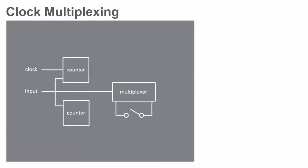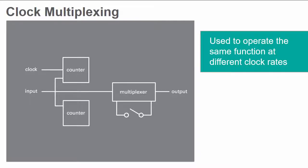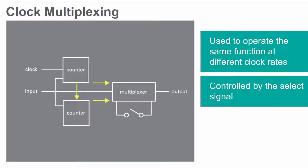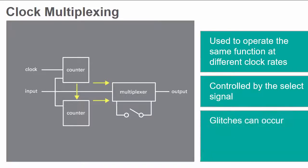Clock multiplexing is a technique used for operating the same logic function at different clock rates, from different sources or inputs. The logic circuits are switched by the select signal, often while the circuit is running. This process of switching isn't very safe and can result in a glitch that occurs when one signal is going down as the other is going up. To eliminate these issues, clock-safe switches can be used.